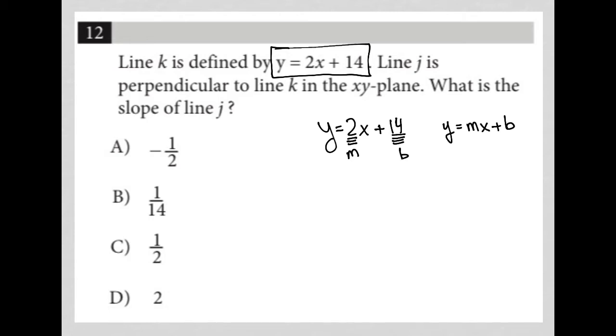The next sentence says line J is perpendicular to line K. What do I know about perpendicular lines? Perpendicular lines have opposite reciprocal slopes.